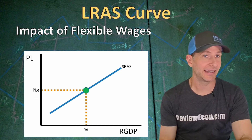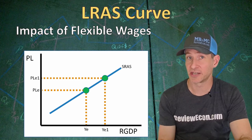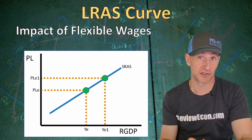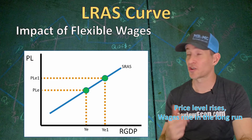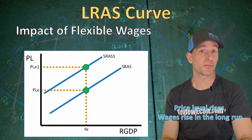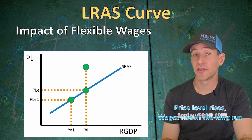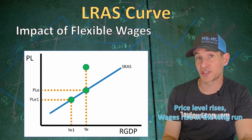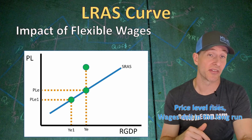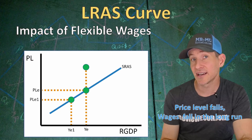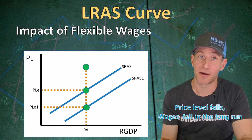Let's say we currently have price level PLE and real GDP output YE. If the price level were to rise, we would also get an increase in real GDP output. In the short run, we will see no change in wages or other resource prices. But in the long run, wages and other resource prices will also rise, causing the short run aggregate supply curve to shift to the left, raising the price level further but decreasing real output back to YE. Conversely, if the price level decreased, real GDP output would fall in the short run, but wages and resource prices would eventually fall too, shifting the short run aggregate supply curve to the right and bringing real GDP output back to YE.